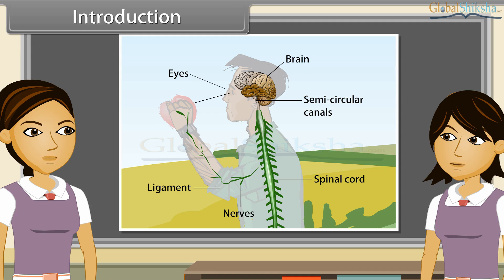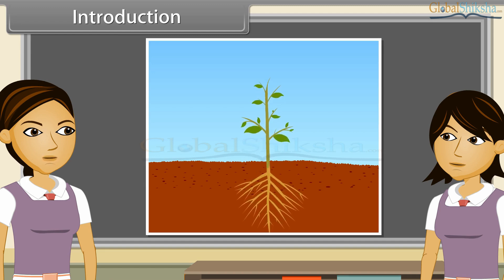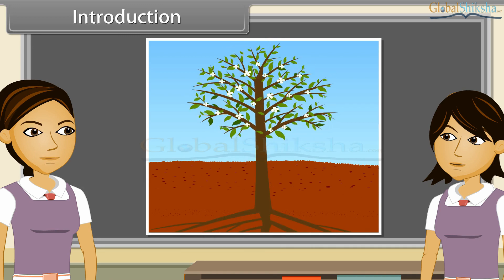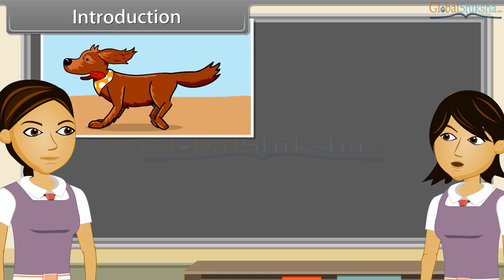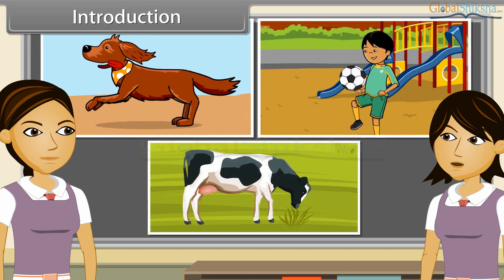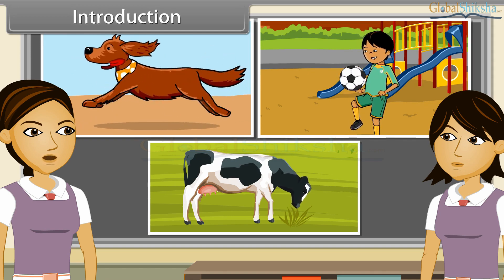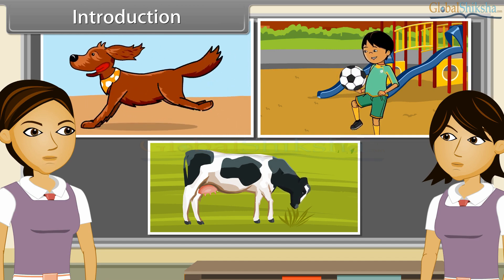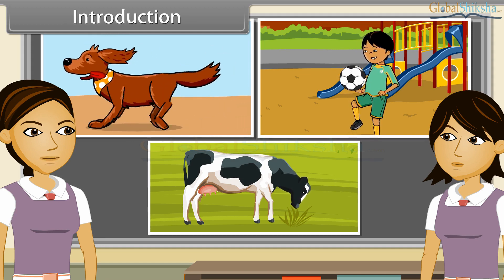Something is called living when a movement is observed in it. This movement can be due to growth, as in plants where a seed germinates and grows, and this movement stops after a particular time. On the other hand, in animals and some plants, movements are not connected with growth — for example, running of a dog, children playing football, and cows chewing cud. These movements are not related to growth, and there is a reason behind each one.